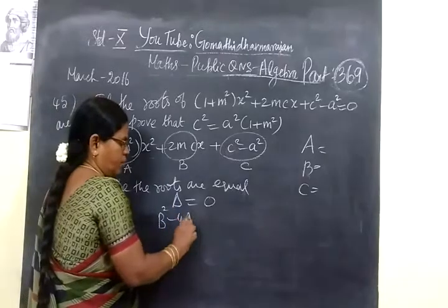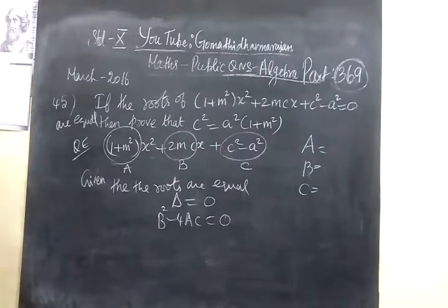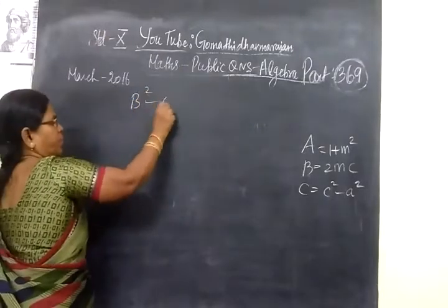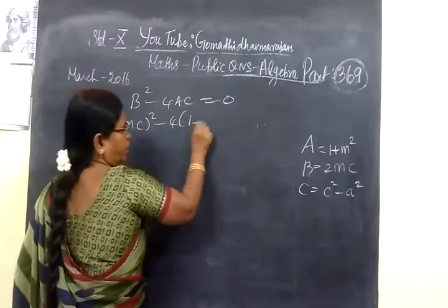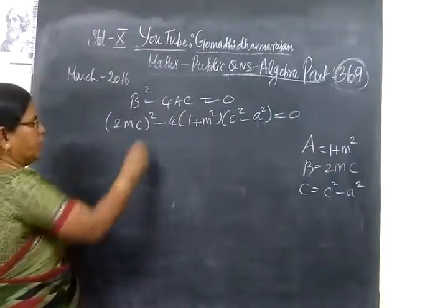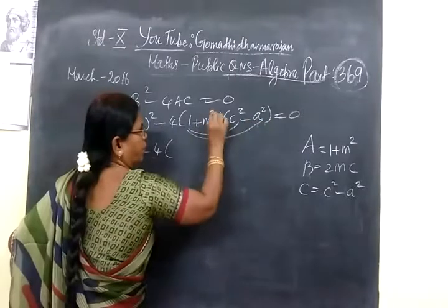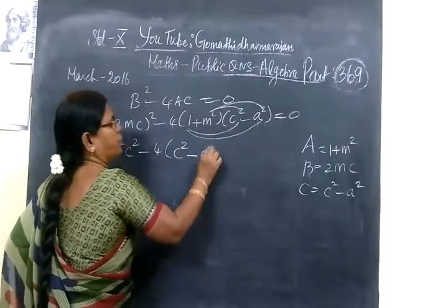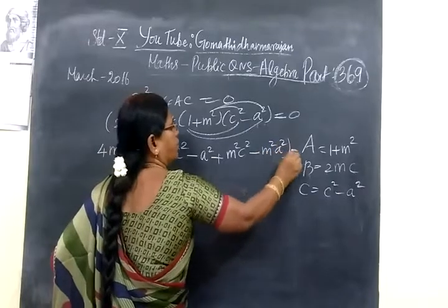The discriminant value is equal to 0, that is b²-4ac = 0. Now we substitute: b value is 2mc, so (2mc)² minus 4 into (1+m²) into (c²-a²) equals 0. Expanding: 4m²c² minus 4 multiplied by (c²-a²+m²c²-m²a²) equals 0.